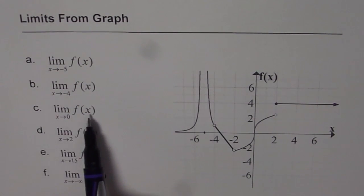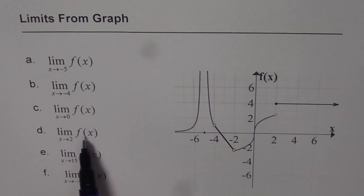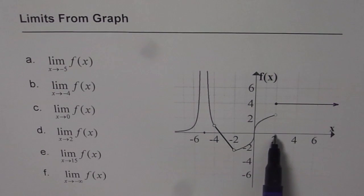And c is limit of function as x approaches 0, the origin. And then we have limit of the function as x approaches 2, x approaches 15 which is not shown in the graph, and when x approaches minus infinity.